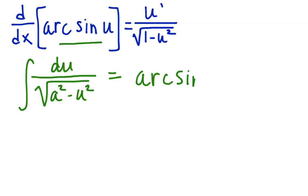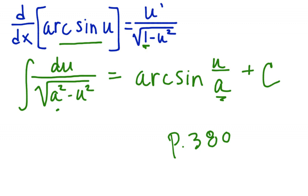Arc sine — you got it! Arc sine of u over a, plus C. When we were doing derivatives, a was always one, but there are obviously possibilities where a is not going to be one. So there are three formulas — the three most common ones: arc sine, arc tan, and arc secant — that we're going to integrate. Turn to page 380, middle of the page, for the three integration formulas. I'll give you a minute to copy those down and we'll look at some examples.